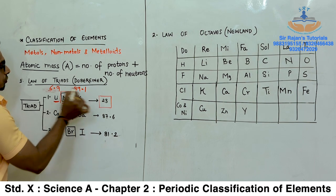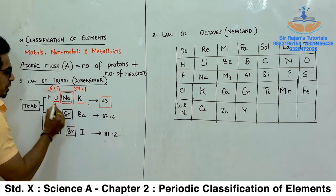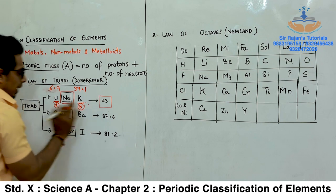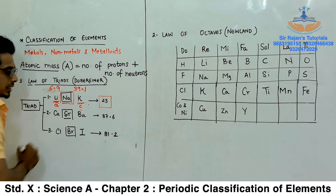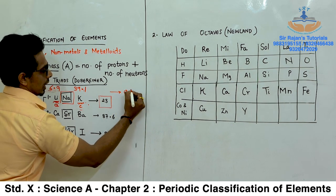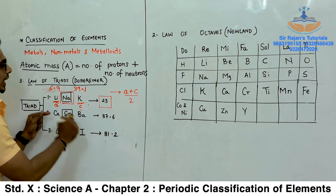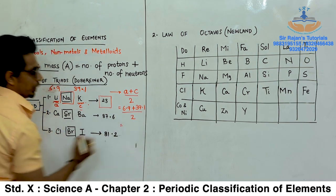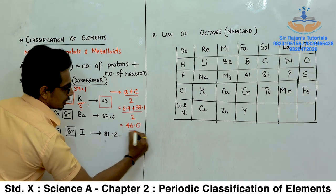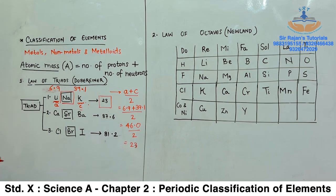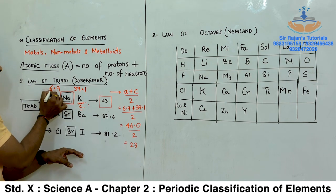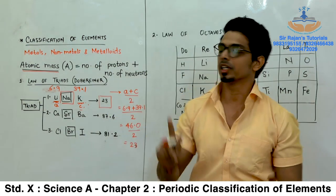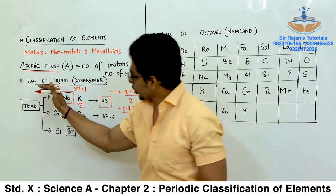The Law of Triads states that when the arithmetic mean of the first and last element in a triad is taken, the answer is the same as the atomic mass of the second element in the triad. Students generally get confused between atomic mass and atomic number — when talking about Dobereiner, nothing was said about atomic number, neither electrons nor protons. Similarly, calculating the mean for the second triad — calcium, strontium and barium — gives approximately 87.7, which is close to the atomic mass of strontium. The third example is chlorine, bromine and iodine.